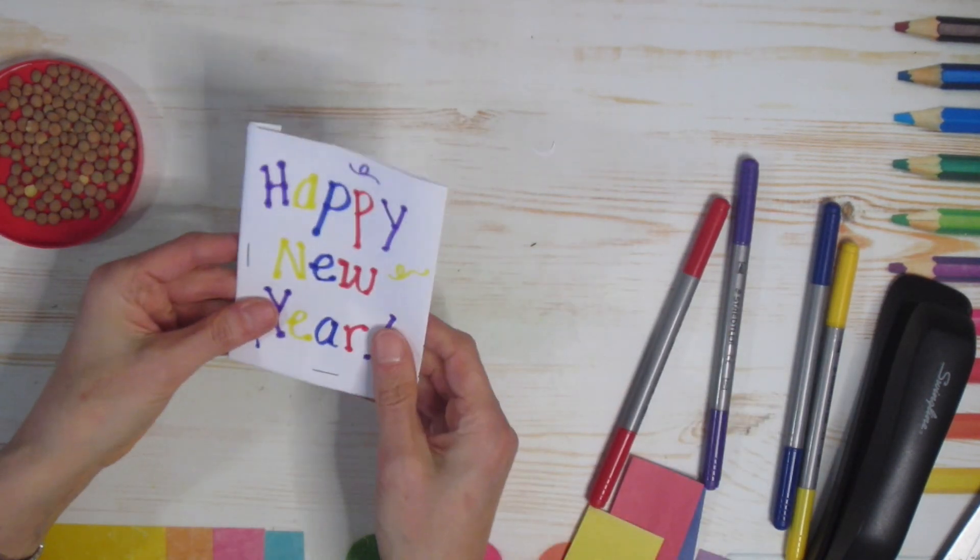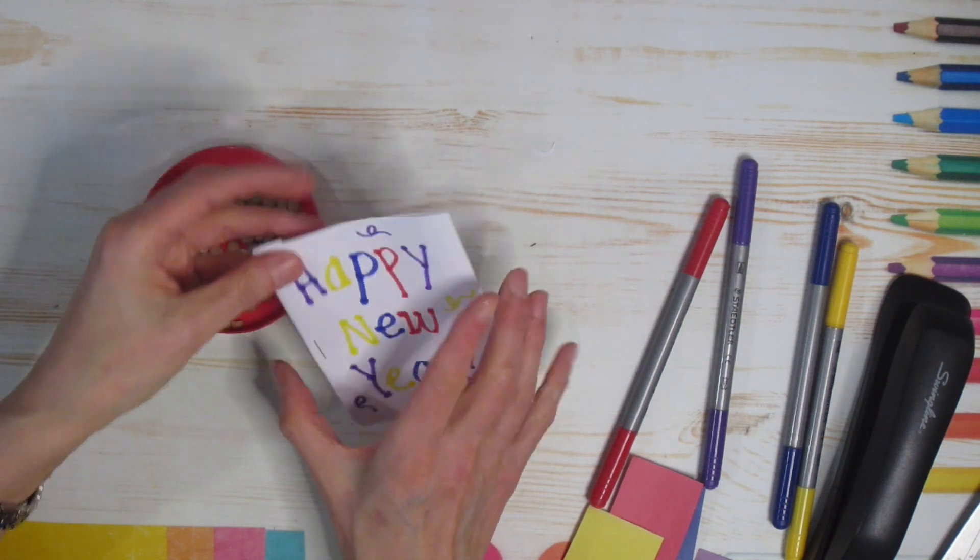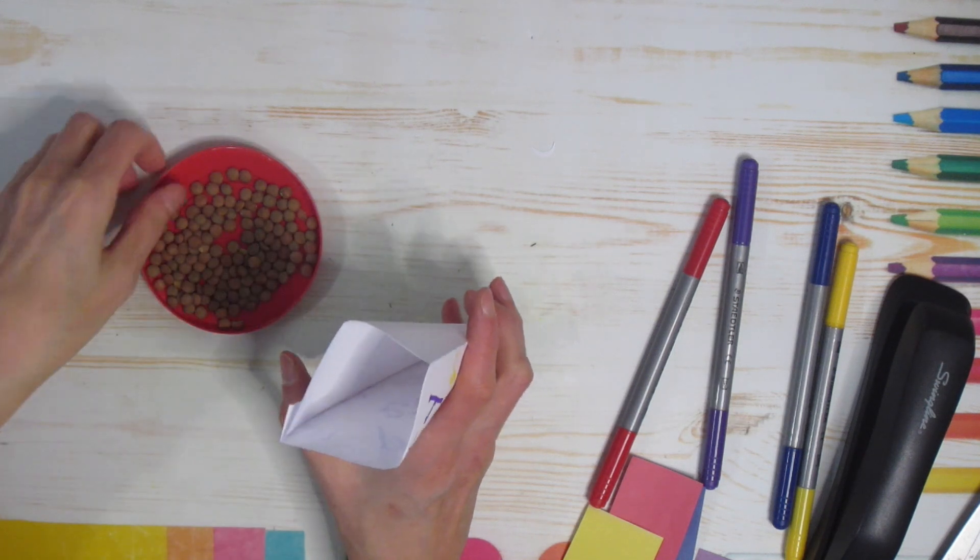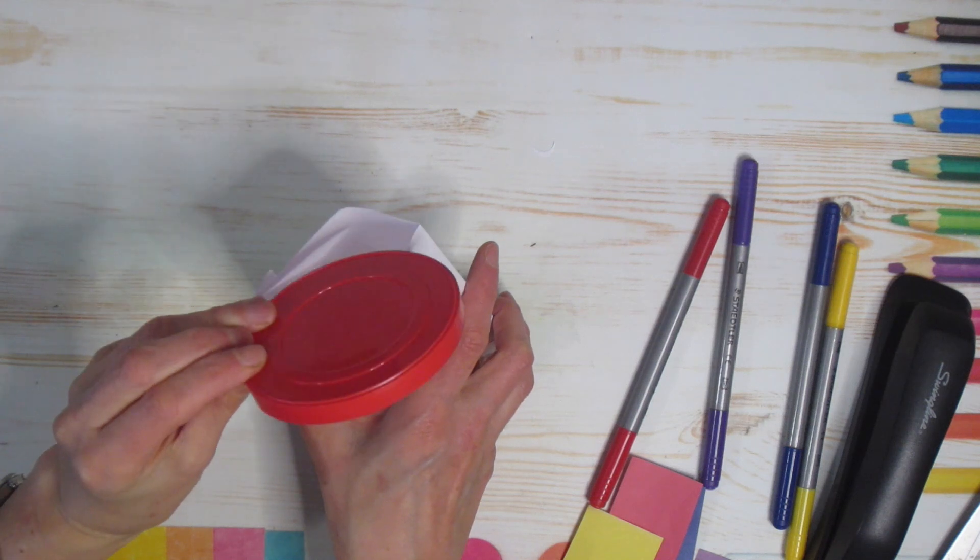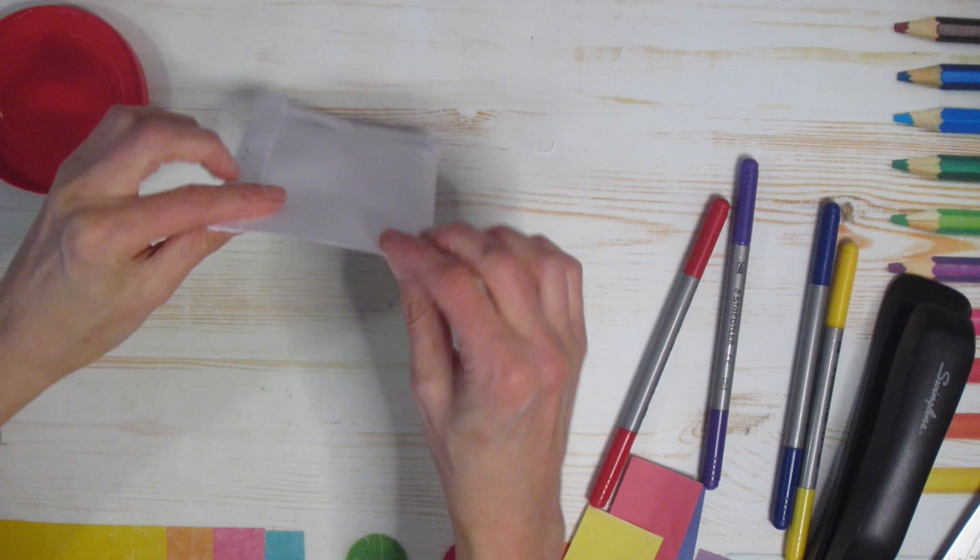Now that we are done decorating, we're gonna take those little sound effects. So I'm using, like I said, lentils, but take whatever you want that's going to make a little bit of noise. You're gonna open everything up and you're just gonna pour them in there. You don't need a lot. See, you can hear it. Once they are in...